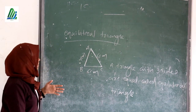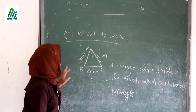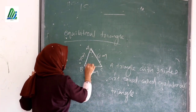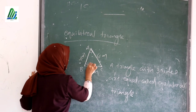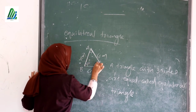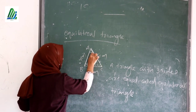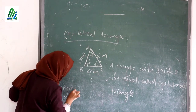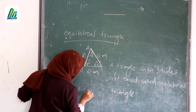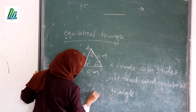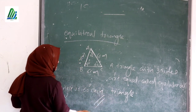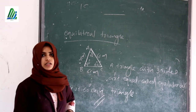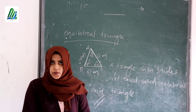The angle of an equilateral triangle is 60 degrees each. So each angle in an equilateral triangle measures 60 degrees.